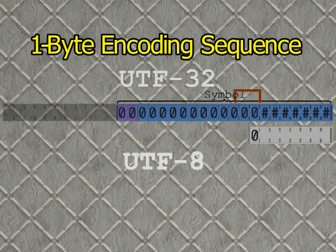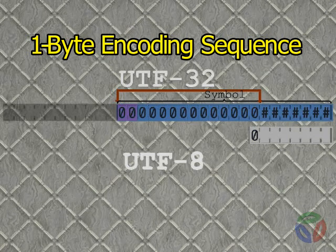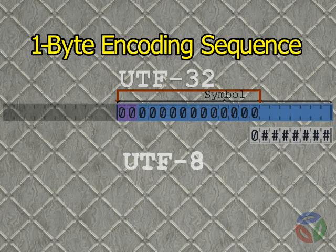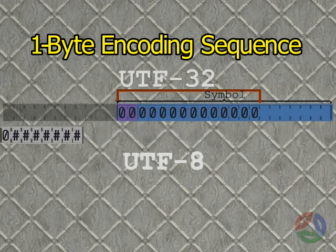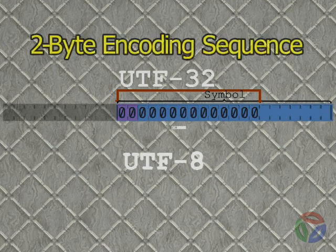If bits 7 through 20 are all 0s, then the code point is ASCII, and only 1 byte is needed to encode the character. The encoded byte is its equivalent ASCII code, with bit 7 clear.